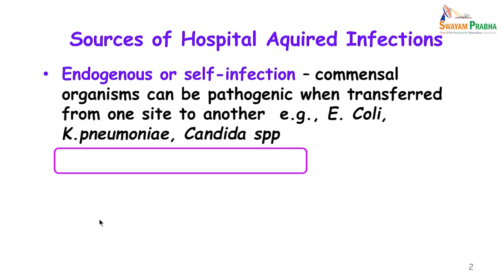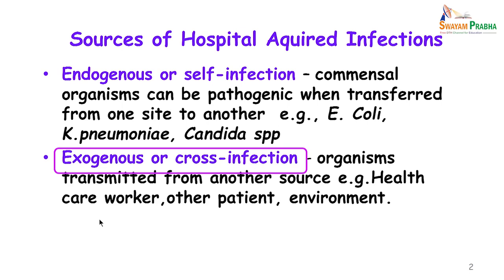What are the various sources of hospital acquired infections? You have endogenous or self-infection — that is, commensal organisms when transferred to another site in the body become pathogenic. Examples of these are E. coli, Klebsiella pneumoniae and Candida species. Then we have exogenous or cross-infection — organisms transmitted from another source, which may be transmitted by healthcare workers, other patients, or even from the environment.